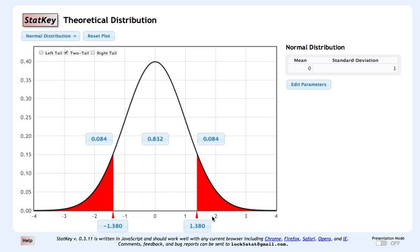So the p-value is both of these shaded regions right now, and both of these shaded regions have area of 0.084. So that means you can calculate the p-value by multiplying 0.084 by 2.